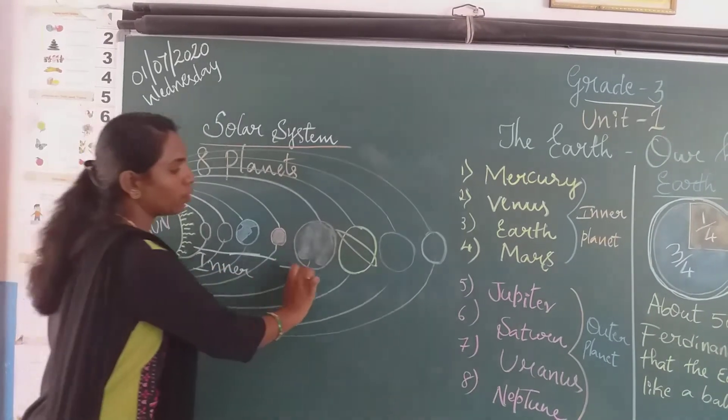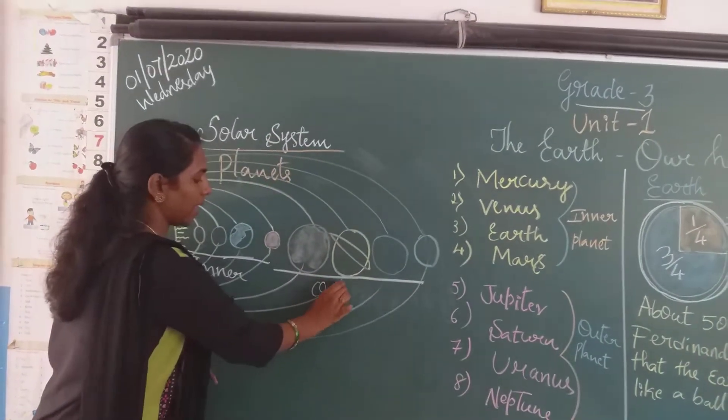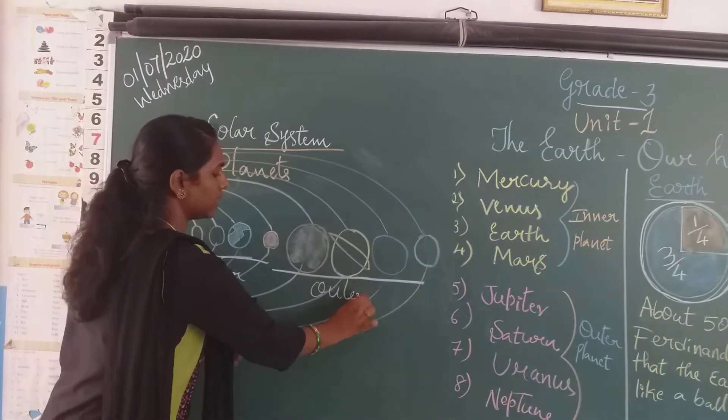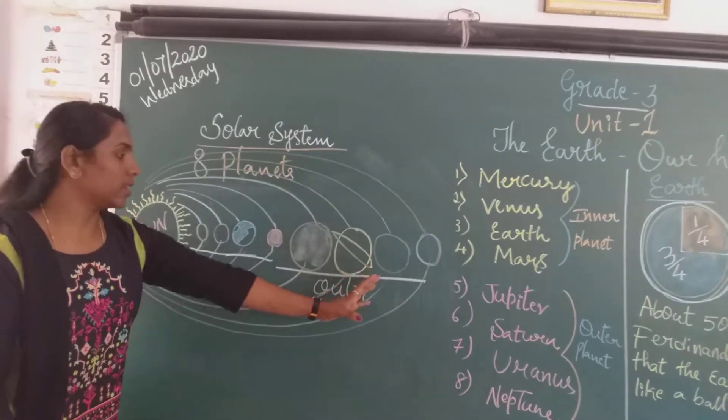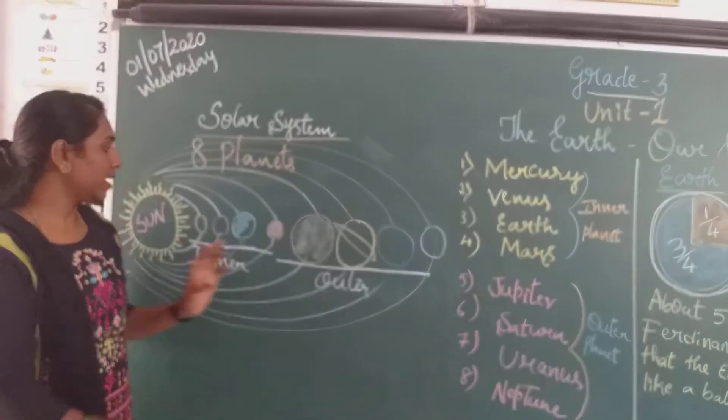These 4 planets are called outer planets because they are a little bit far away from the sun. So they are called the outer planets.